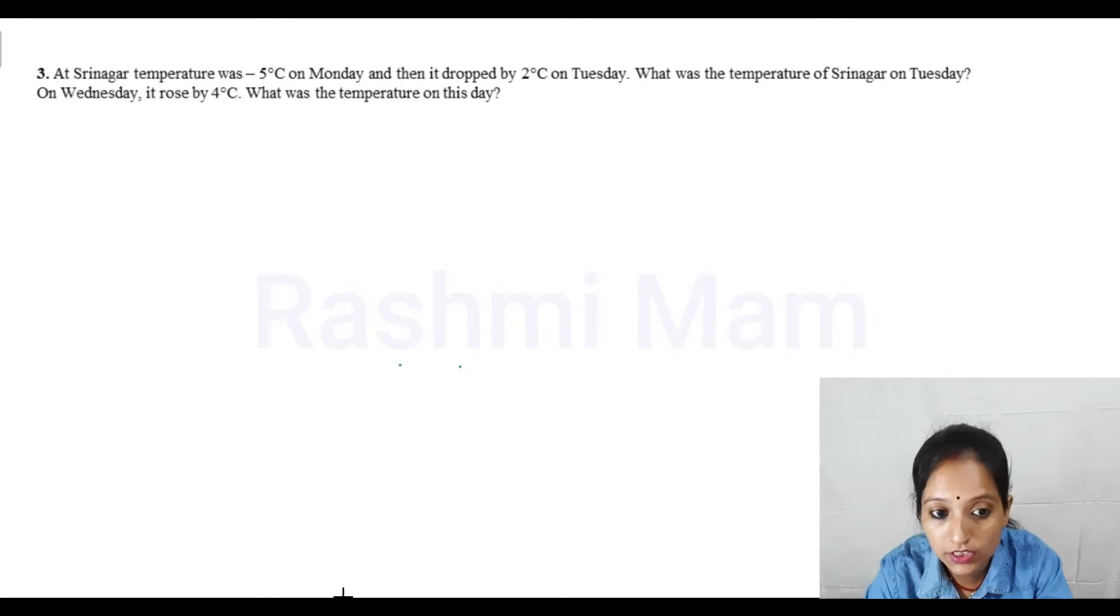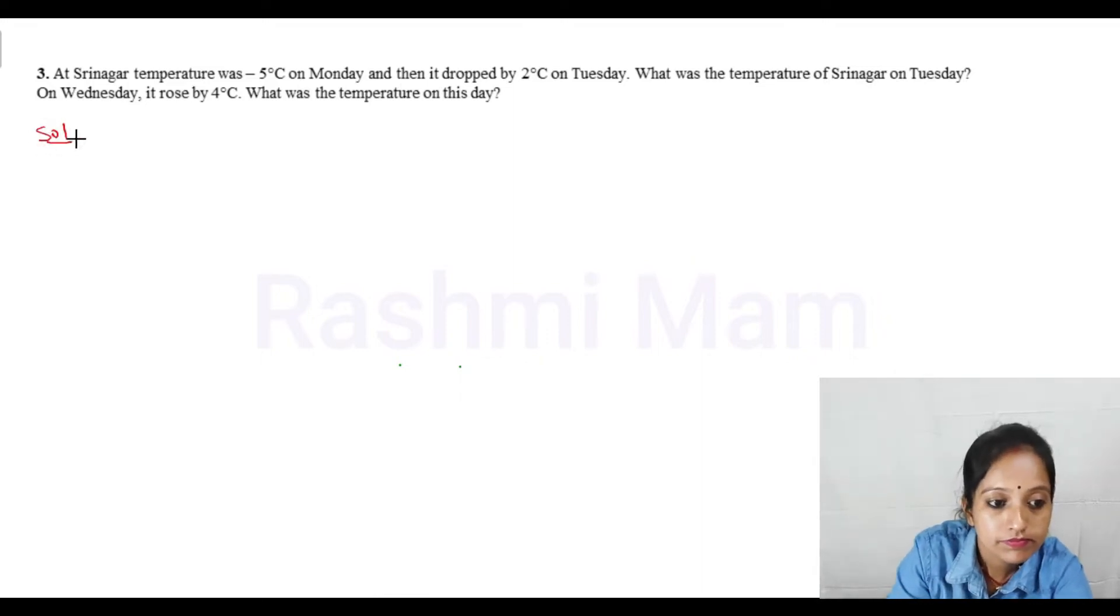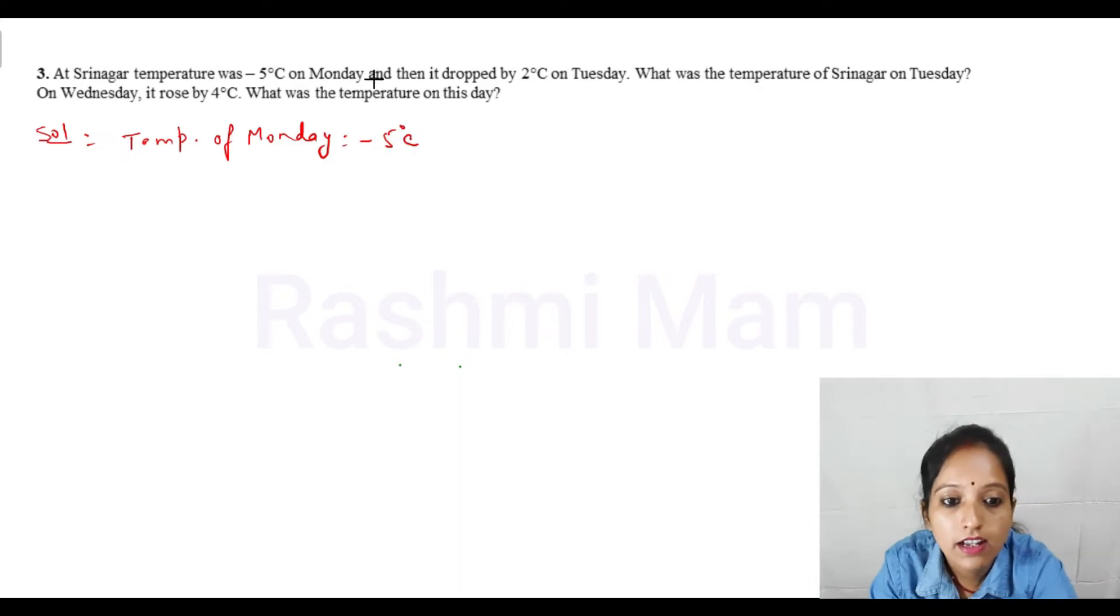The Srinagar temperature on Monday was minus 5 degrees C. Temperature of Monday is what? Minus 5 degrees C. And then it dropped by 2 degrees C on Tuesday. So on Tuesday, the temperature decreased by 2 degrees from minus 5 degrees C.